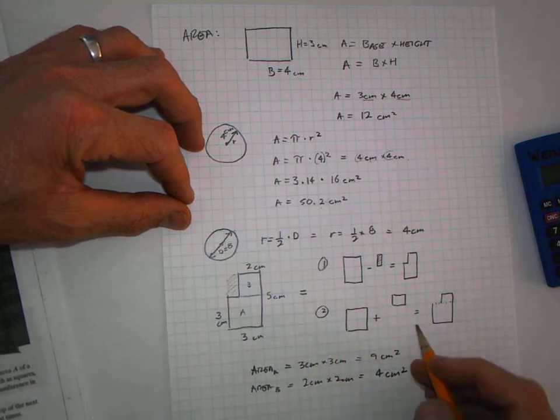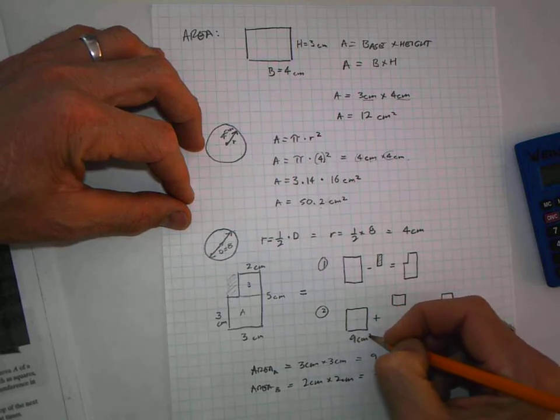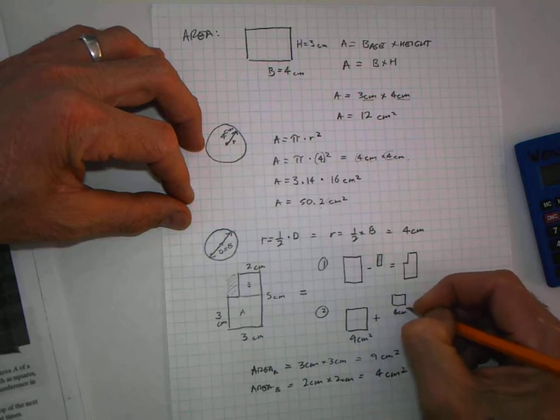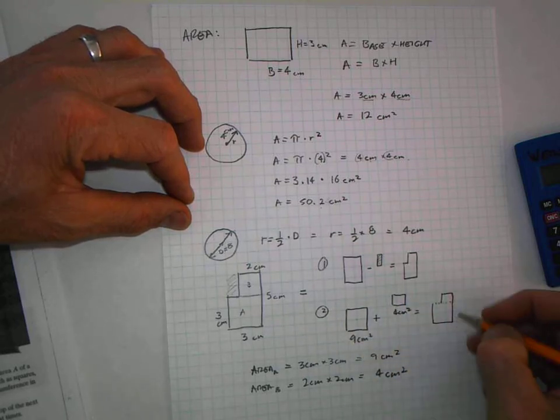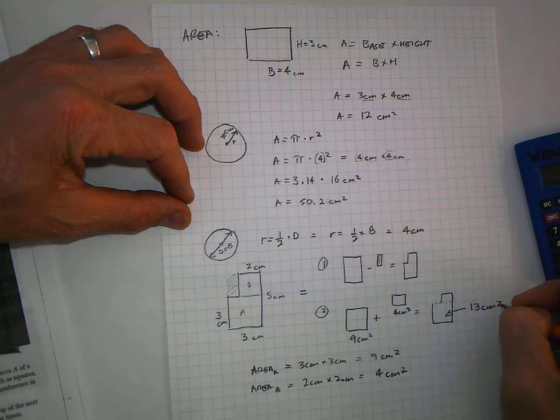We're going to add these together: 9 cm² plus 4 cm² equals a grand total of 13 cm².